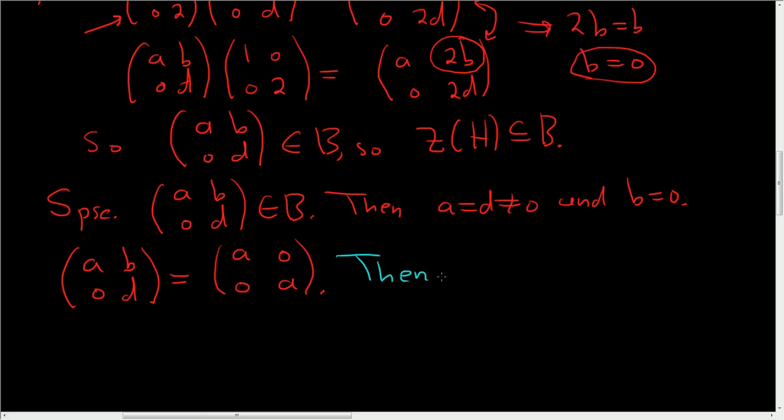So let me just say it this way. Then for all... this is kind of sloppy, but I'll do it. For all (a', b'; 0, d') - that's what the matrices look like in H, because c is 0. Let me not call it a, let's call it a prime, b prime, d prime. Because I already have a here, so that's a recipe for disaster.